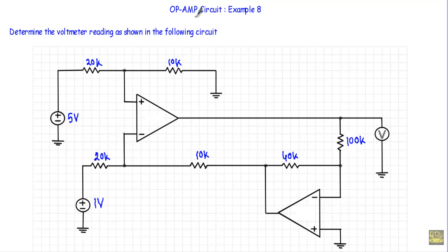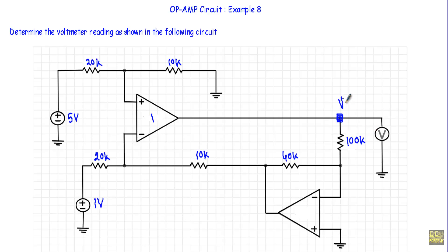In this video I will show you an operational amplifier circuit. This is the 8th example, which means this is the last example of this series. We need to determine the voltmeter reading as shown in the following circuit. The voltmeter will indicate the output voltage of the operational amplifier, so we have to determine that output voltage.